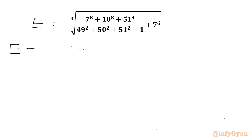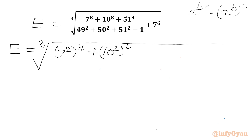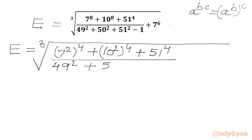Now I will write E equal to cube root of 7 to the power 8. Can we write 7 squared and then whole power 4? As we all know, A to the power B times C equals A to the power B, whole power C. Similarly, 10 to the power 8 can be written as 10 squared, whole power 4. And 51 to the power 4 as it is, over 49 squared plus 51 squared. Then we write 50 squared, minus 1 squared, plus 7 squared whole cubed.